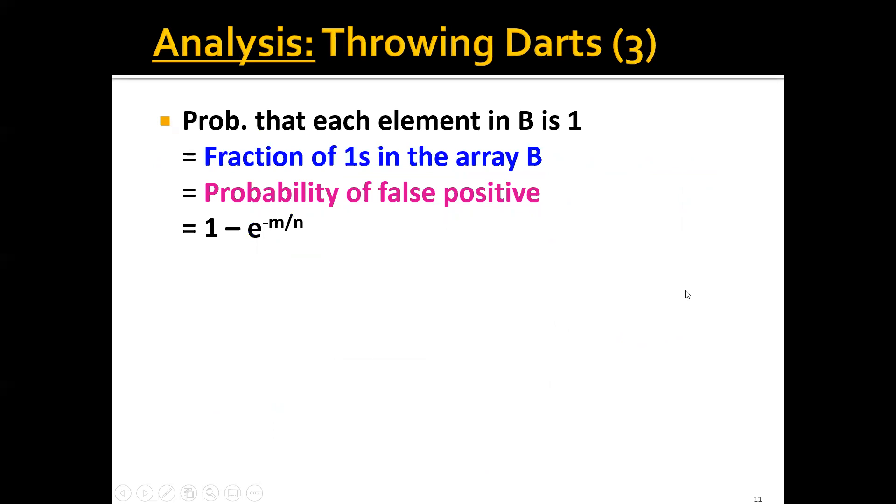So basically the probability that each element in the bit array B is 1 is equal to the fraction of ones in the array B. And this is equal to the probability of false positive, because if you have 30% of ones in the array B, then there's a 30% chance that any item can be hashed to a position of one and becomes a false positive. The probability of false positive is 1 - e^(-m/n).